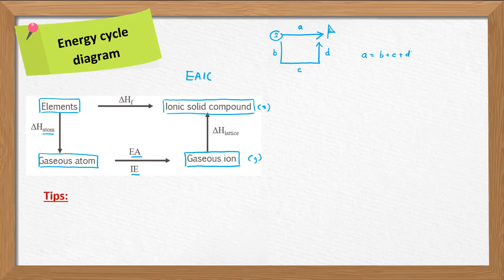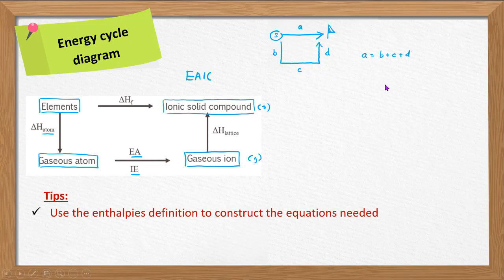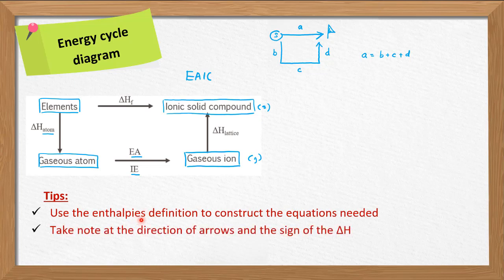Here are some tips to construct the energy cycle diagram. First, use the enthalpy definitions to construct the equations needed. Remember where your focus is and how to construct a balanced equation. Next, take notes on the directions of arrows and the signs of delta H — directions matter because we apply Hess's law. If you reverse the equation, you need to reverse the sign — from positive into negative or from negative into positive.